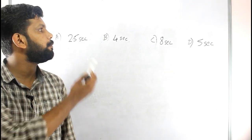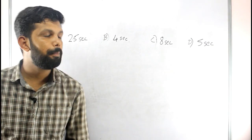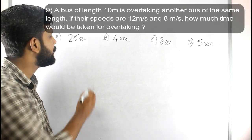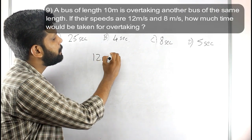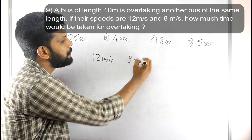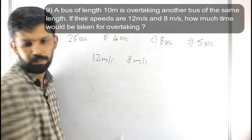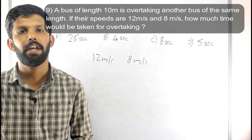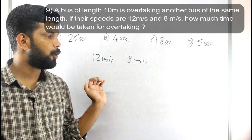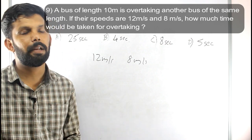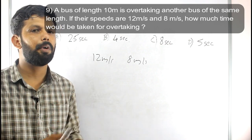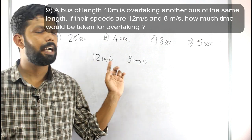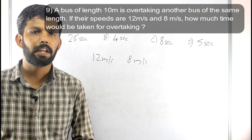A bus of length 10 meters is overtaking another bus of the same length. Their speeds are 12 meters per second and 8 meters per second. How much time would be taken for overtaking? The total distance to cover is 10 plus 10 equals 20 meters.